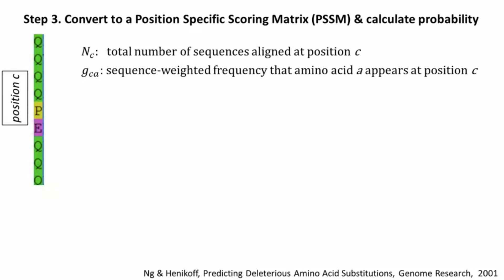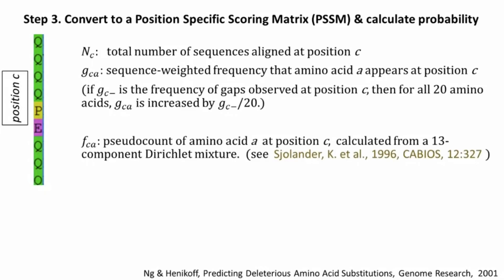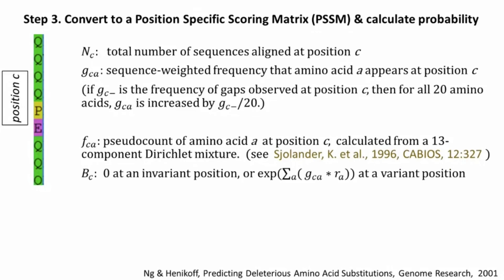Let's first define a few terms. N(C) is defined as the total number of sequences aligned at position C. G(C,A) is the sequence-weighted frequency that amino acid A appears at position C. If there is a gap in the alignment and G(C,-) is the frequency of gaps observed at position C, then for all 20 amino acids, G(C,A) is increased by G(C,-) divided by 20. Because the sequences in the multiple sequence alignment are only a sample of all evolutionarily homologous sequences, we need to consider the possibility that some amino acids exist in nature at position C but are not observed. To deal with this, we introduce pseudocount F(C,A) for unobserved amino acid A that might occur at position C using a 13-component Dirichlet mixture.